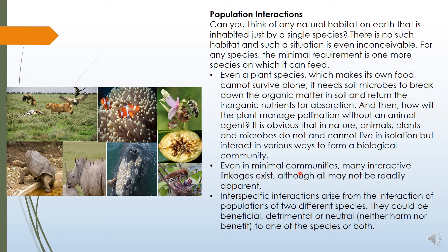It is obvious that in nature, animals, plants, and microbes do not and cannot live in isolation but interact in various ways to form a biological community. Interspecific interactions arise from the interaction of populations of different species. They can be beneficial, detrimental, or neutral to one or both of the species involved.